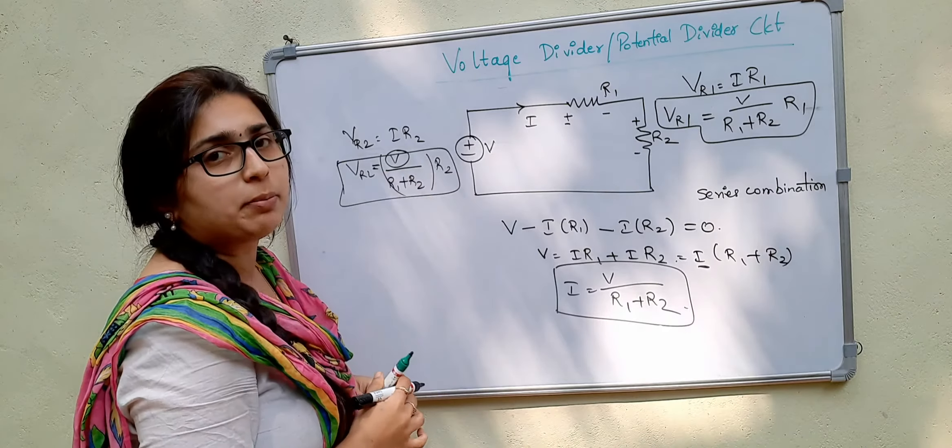We can also apply this to N number of resistors connected in series. If we have another resistor R3, then V equals I into R1 plus R2 plus R3, and I will be equal to V divided by R1 plus R2 plus R3. This is our equivalent resistance since all three resistors are connected in series. The voltage drop across R3 is the ratio of R3 divided by the equivalent resistance, multiplied by the supply voltage V. Similarly, V R2 equals R2 divided by equivalent resistance times V, and V R1 equals V into R1 divided by R1 plus R2 plus R3. This is the voltage divider circuit.